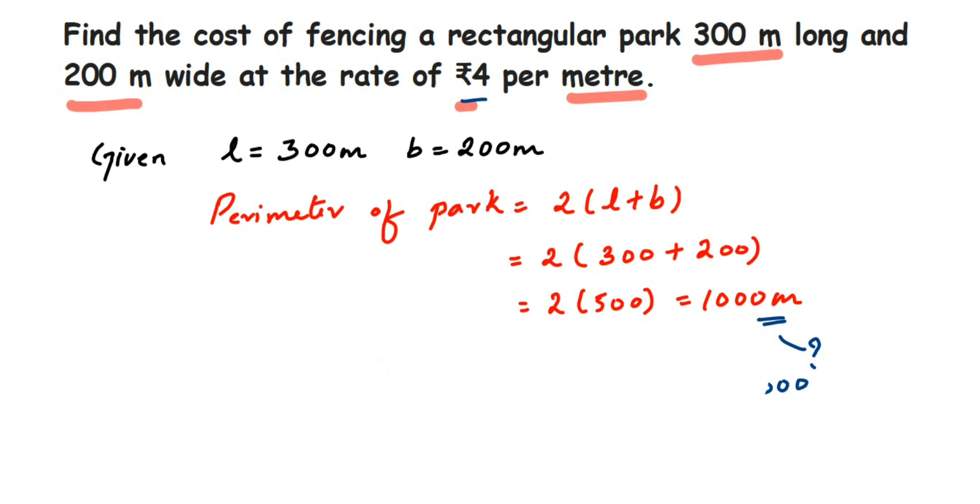That is how we can calculate the total cost. Therefore, total cost for fencing 1000 meters will be equal to rupees 4 multiplied by 1000, which is equal to 4000. So that was a simple question. I hope it is clear.